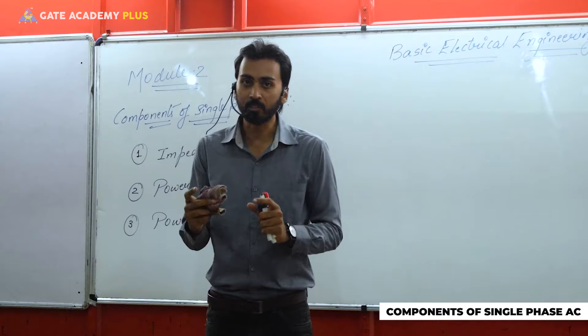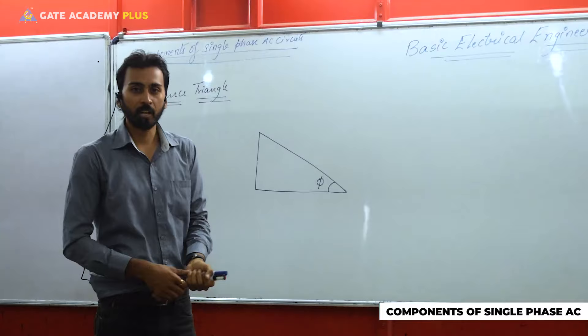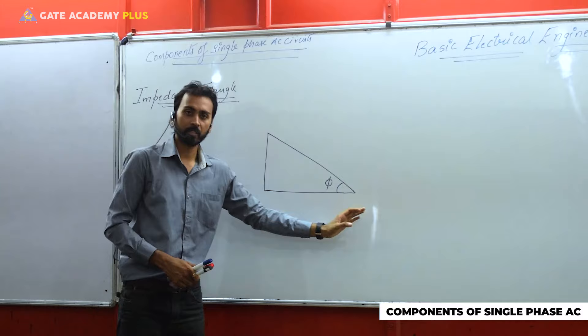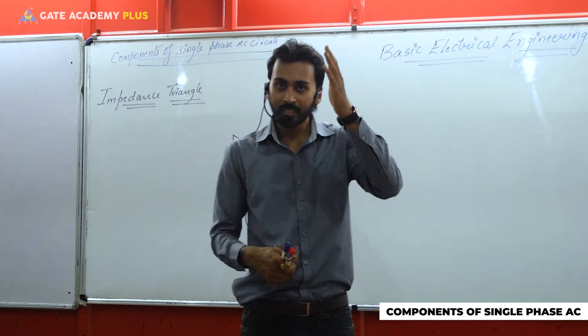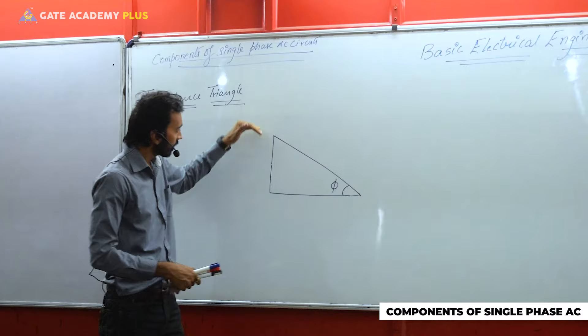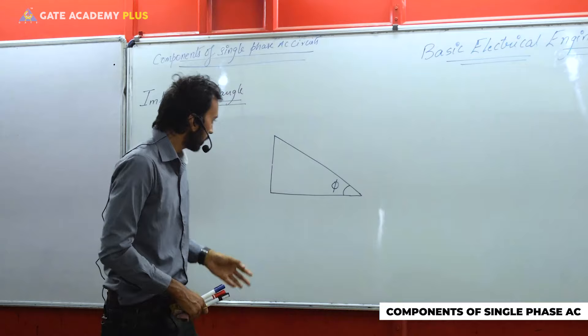Let's see what the impedance triangle is and how to express it. Starting from the impedance triangle — impedance triangle means a right angle triangle. If I define it: the base of that right angle triangle represents the resistive load of the circuit. The perpendicular section represents the reactive portion of the circuit, and their resultant is the overall impedance available in the circuit.